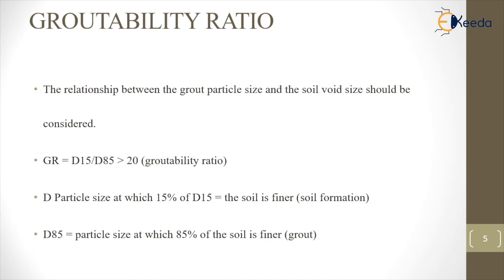Groutability ratio shows the relationship between the grout particle size and the soil void size. It is represented as GR, which is equal to D15 divided by D85 and should be greater than 20. D15 is the particle diameter at which at least 15% of the particles are finer. In this ratio, D15 refers to the soil and D85 refers to the grout.